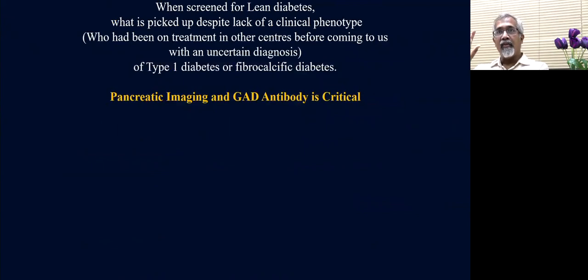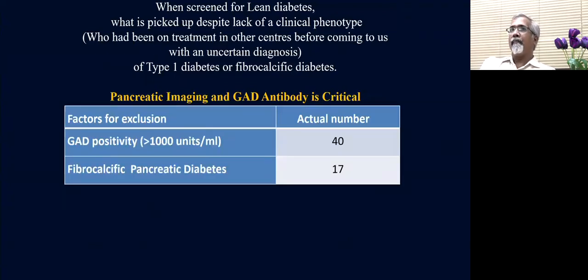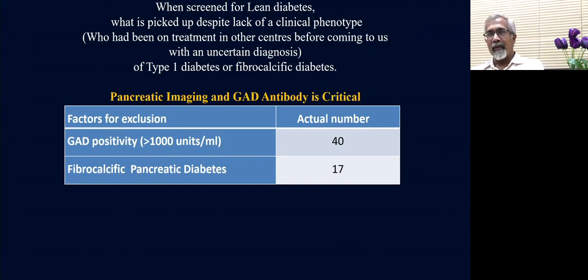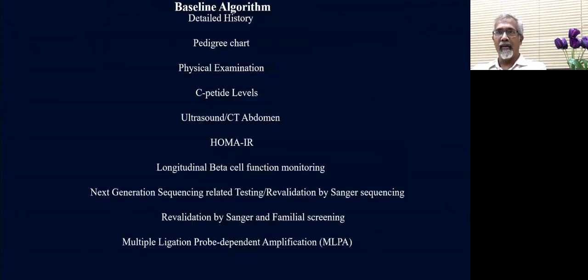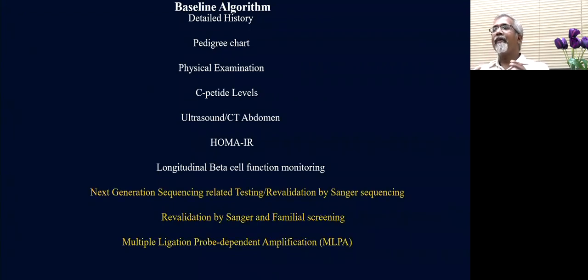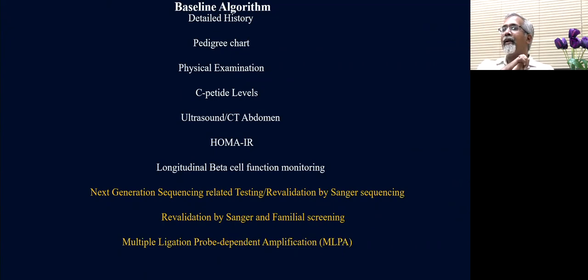Pancreatic imaging is critical, as are GAD antibodies when you're not sure of your diagnosis. Many patients previously seen at other centers had neither of these tests done — a large number were found to be GAD antibody positive, and others had calcification in the pancreas which clinched the diagnosis. The baseline algorithm includes basic tests at primary or secondary care level; next-generation sequencing is crucial along with accessory Sanger sequencing and MLPA for patients with deletions or insertions not picked up by exome sequencing.